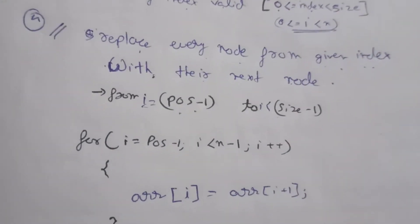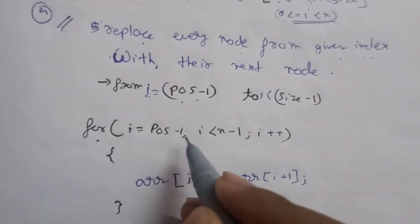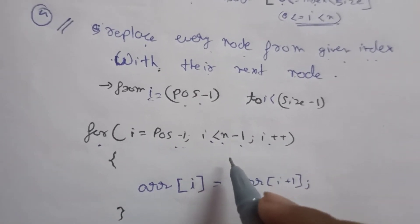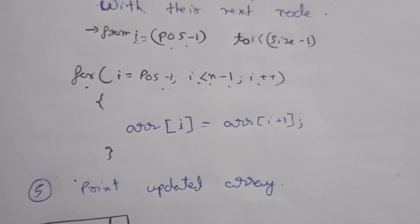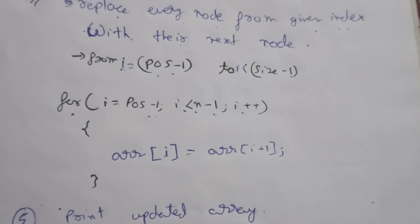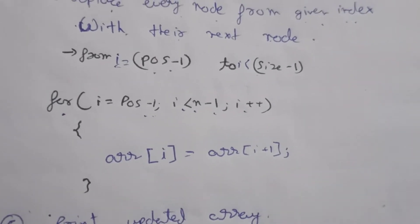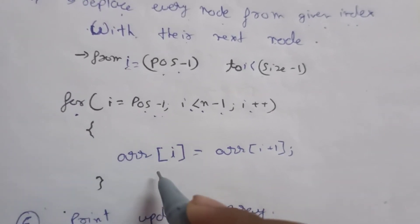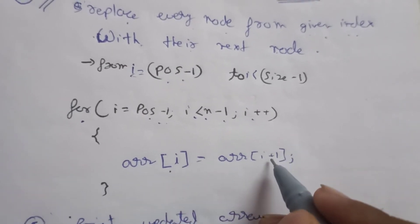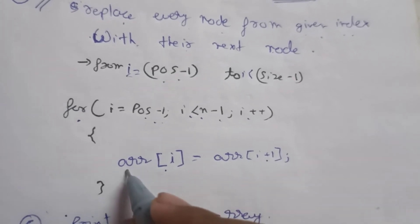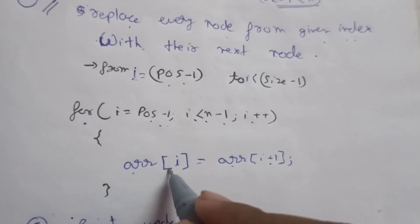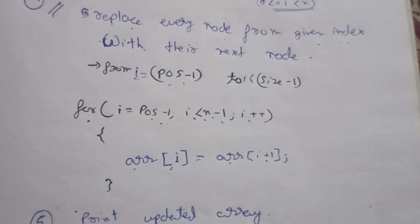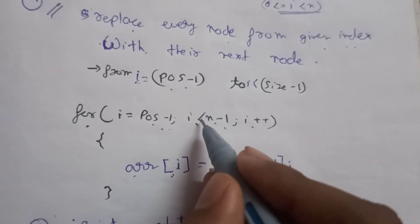See the for loop: for i equals position minus one, i less than n minus one, i plus plus. Unlike insertion where we start from the end, for deletion we start from the given position and traverse in increasing order. Inside the loop, array of i is set to array of i plus one, shifting elements one step to the left. We use less than, not less than or equal to, because when i becomes n minus one, array of n would be out of bounds.